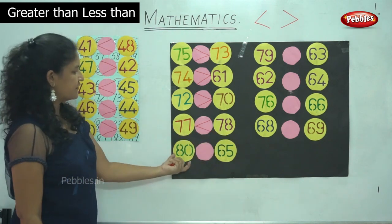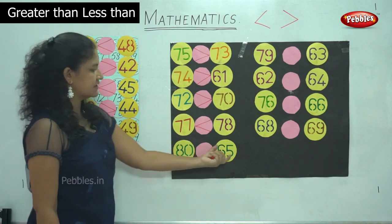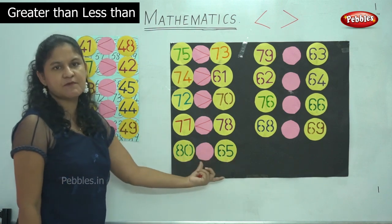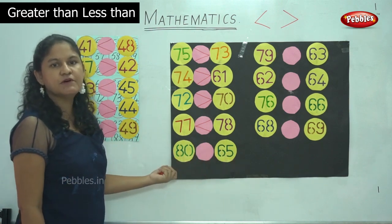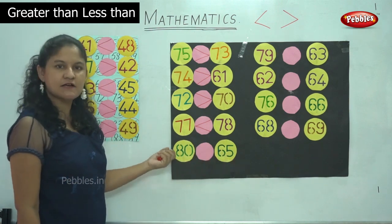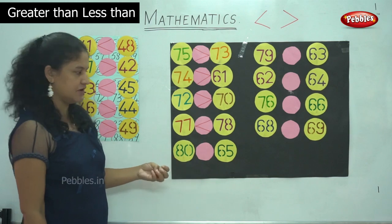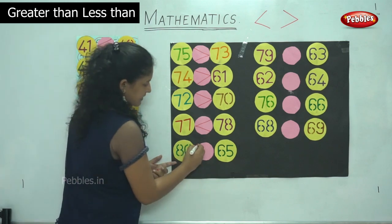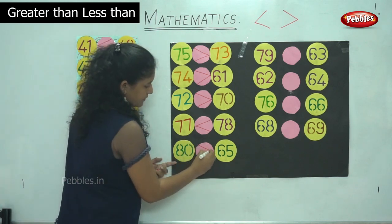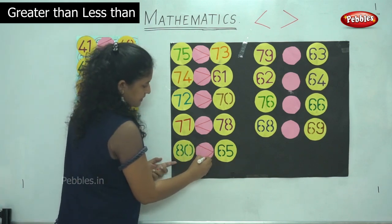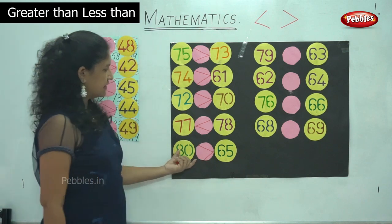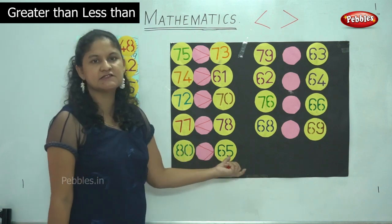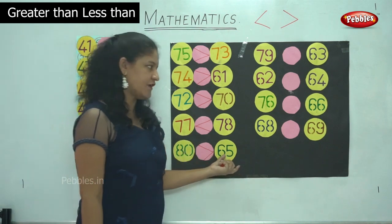Next we have 80 and 65. Between these two numbers, number 80 is the bigger number, so the mouth of the alligator opens towards the bigger number. We read it as 80 is greater than 65.